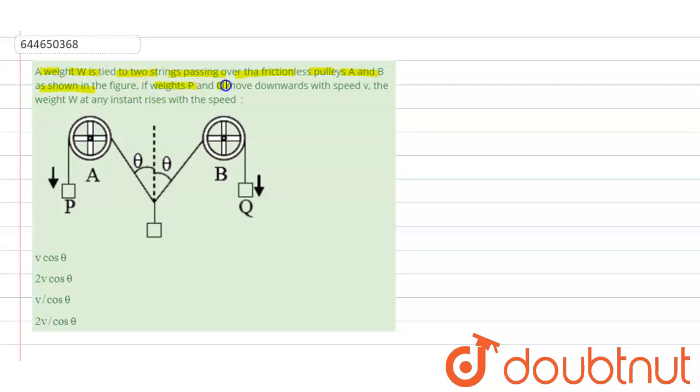If the weights P and Q move downwards with a speed v, then the weight W at any instant rises with the speed. So this question is based on the chapter laws of motion.